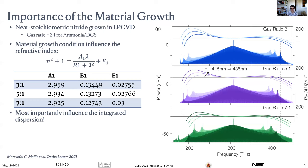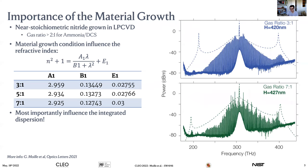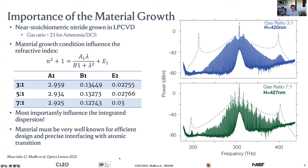This is really important because if you do not control your material growth exactly, you can have the exact same design but produce a different comb. We have shown experimentally that the dispersive wave shifts even with the same geometry, and you can compensate for material dispersion changes by adjusting geometrical dispersion — but that's an ad hoc method. It's always better to know your material dispersion so you can predict what comb you will get.